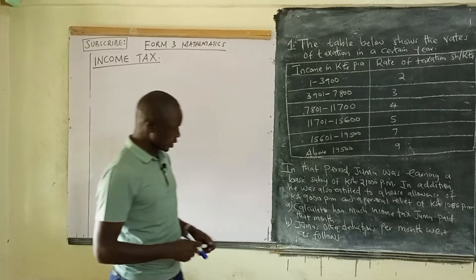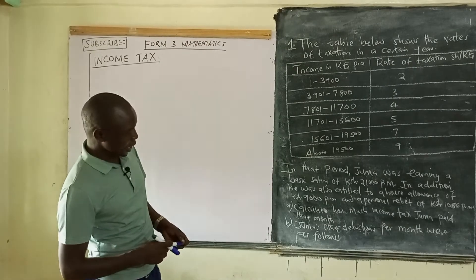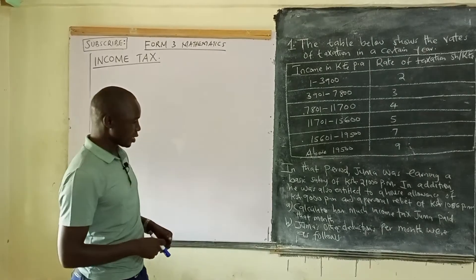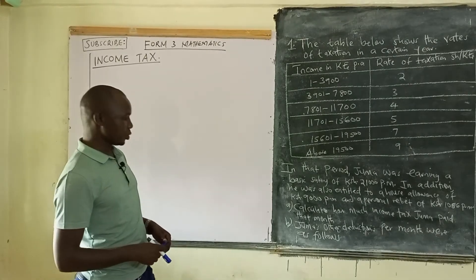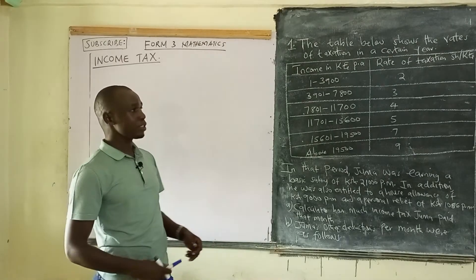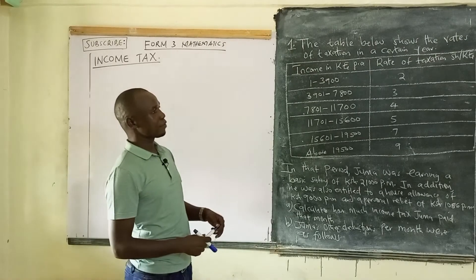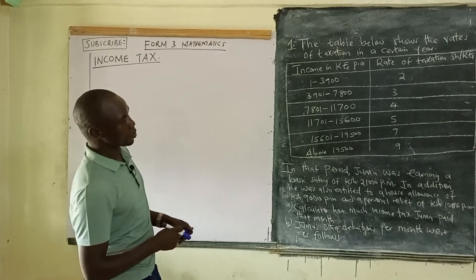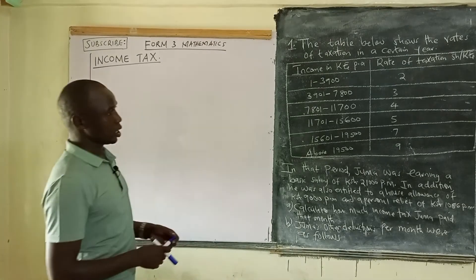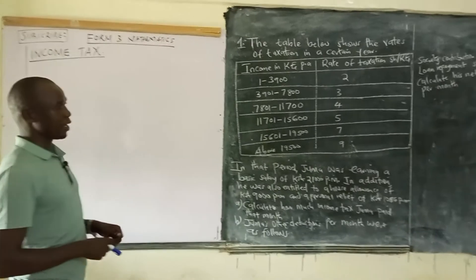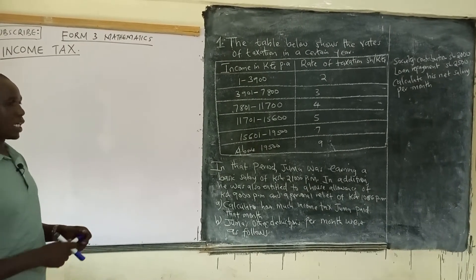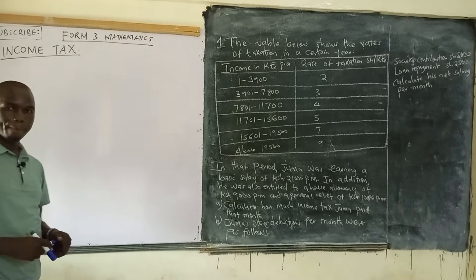The requirement is: first, calculate how much income tax Juma paid that month. Second, Juma's other deductions per month were: society contribution of 2,000 and loan repayments of 2,500. We are required to calculate his net salary per month.